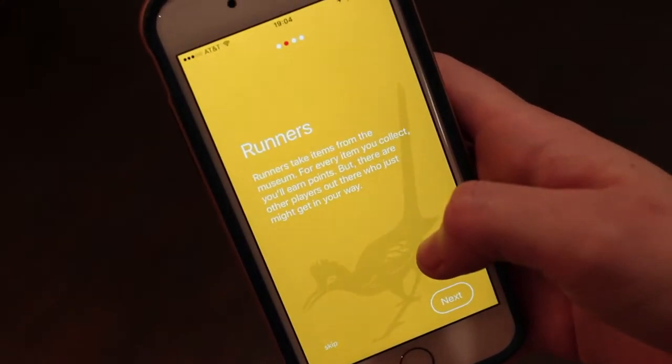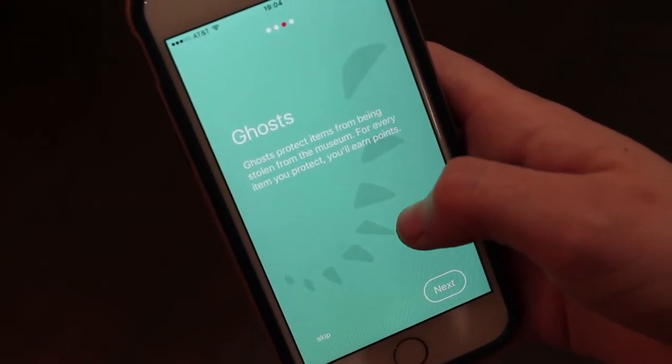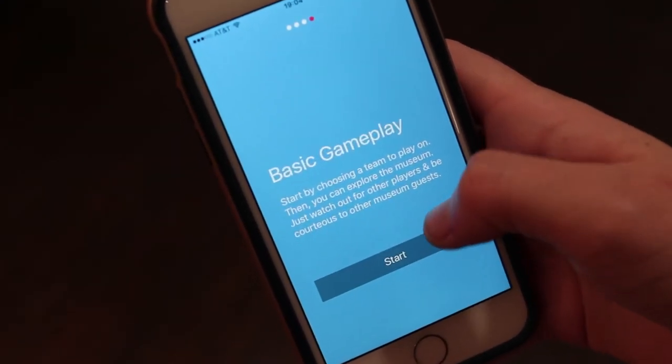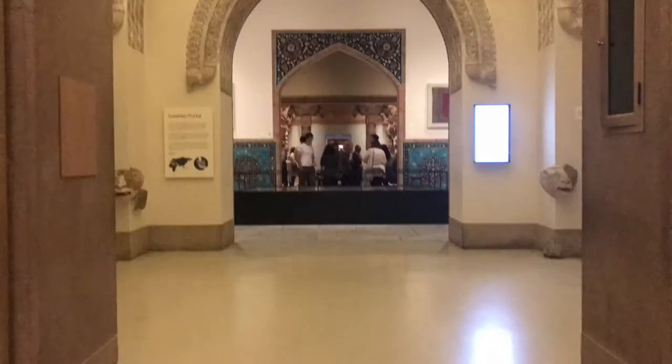Players select from two teams: runners and ghosts. Runners score points by capturing artifacts found in the museum. Ghosts protect the artifacts by creating challenges for the runners.